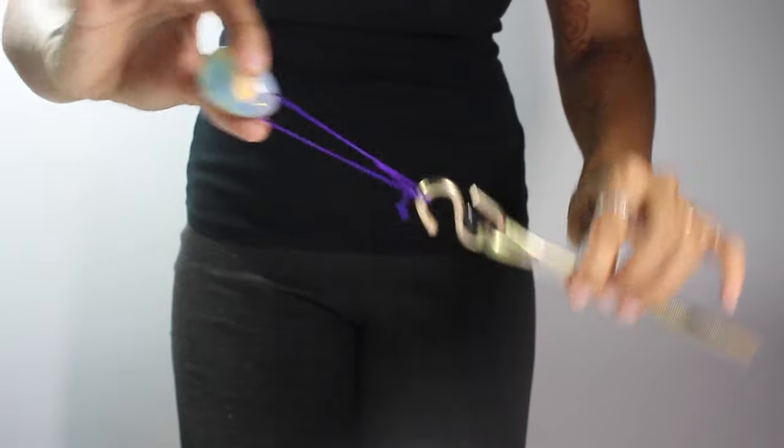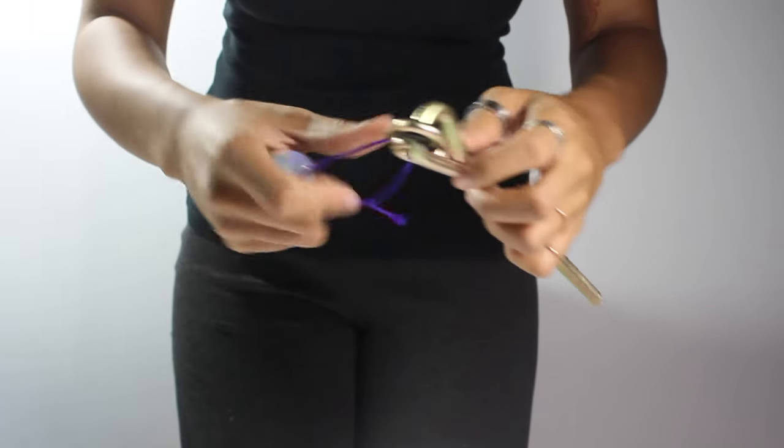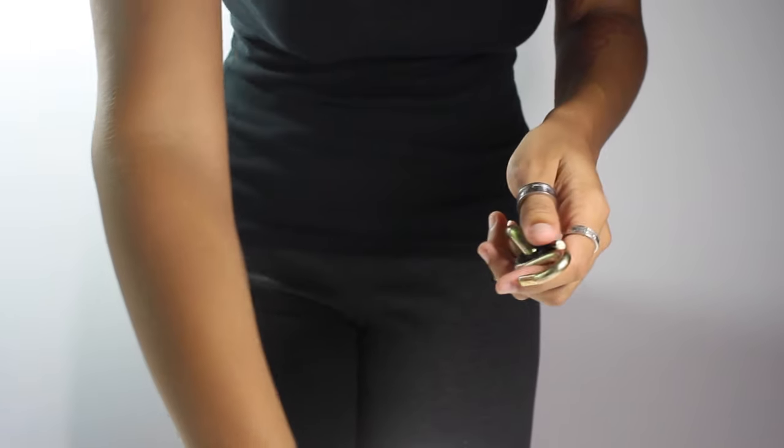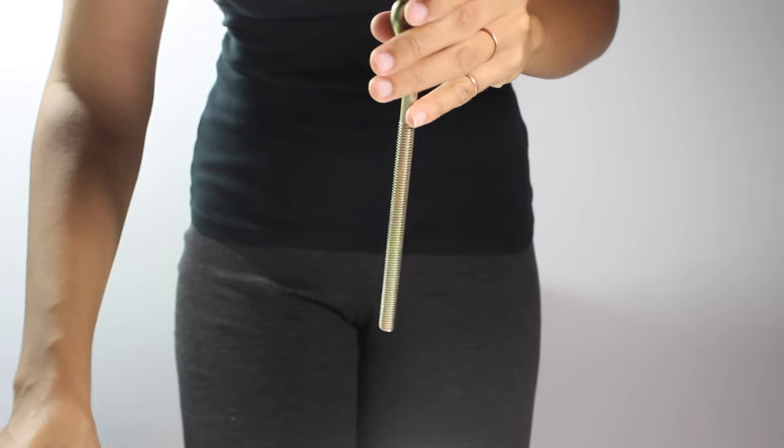There should be enough length in the cord loop so that it hangs a few inches from your body. We suggest attaching the weight load after you have properly and securely inserted your Kegel egg.